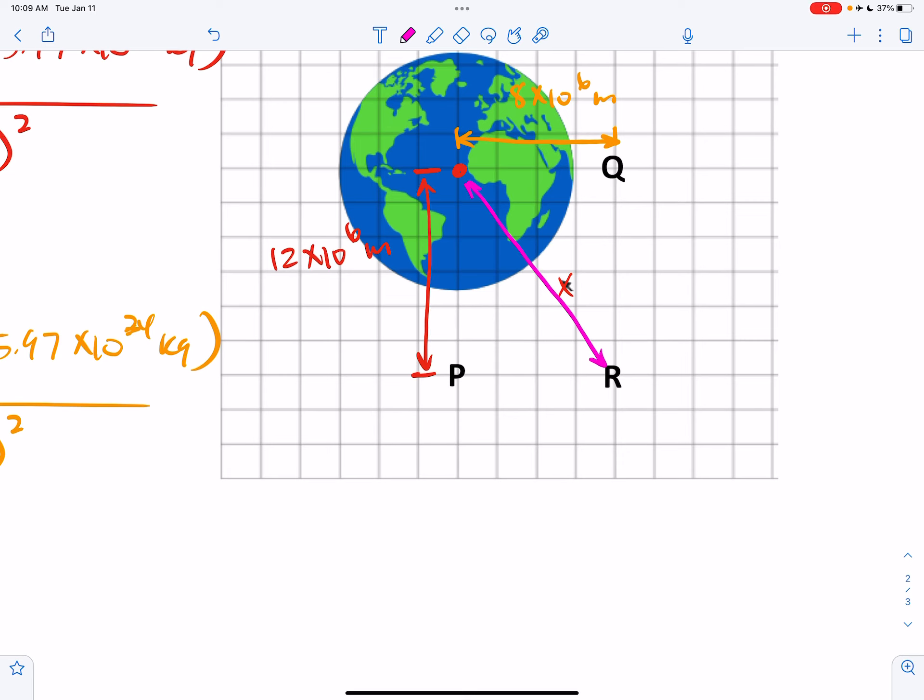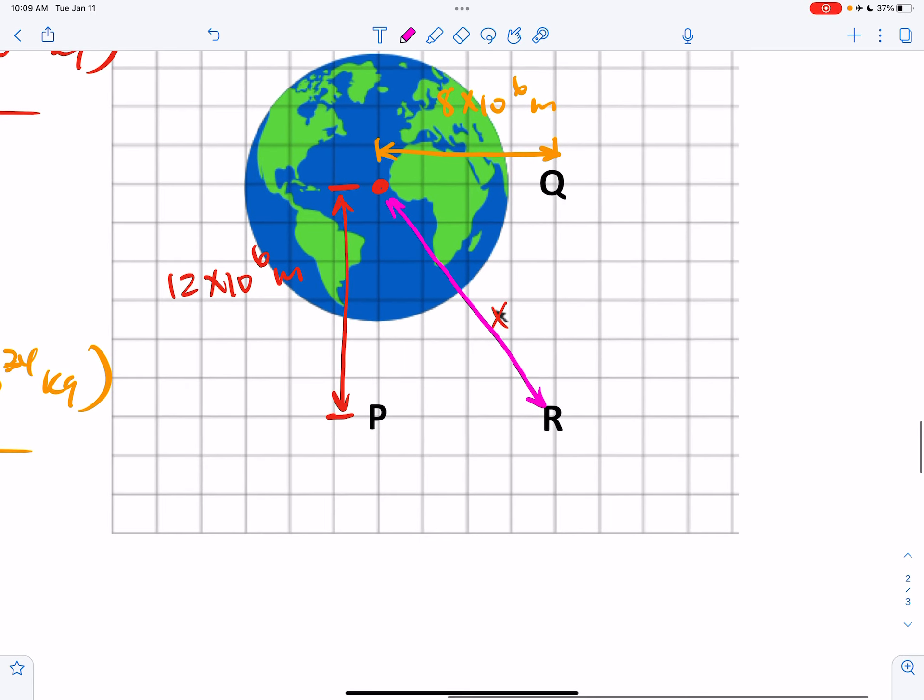Well, we're going to have to do a little bit of geometry. So let's see. So this is like a little triangle here, right? We know that this side of the triangle is 12 times 10 to the 6th meters. This top of the triangle is 8 times 10 to the 6th. So this is a Pythagorean theorem opportunity.